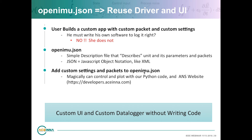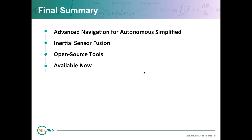In final summary, OpenIMU presents an advanced navigation platform for autonomous system development and makes that development faster and easier. It provides a toolkit of inertial sensor fusion algorithms, and these tools are open source and available now. I really look forward to seeing what kinds of applications get developed, and I'm happy to take some questions now.